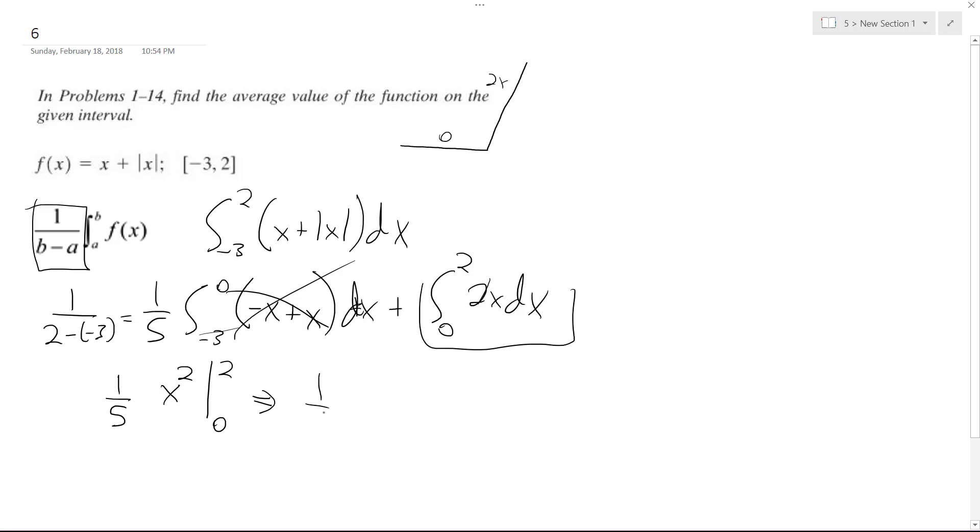So what we end up with is 1 fifth of 2 squared, which is 4, minus 0 squared, which is 0, and we ultimately get 4 over 5, and this is our average value for the function from negative 3 to 2.